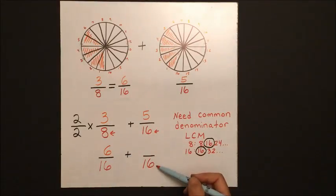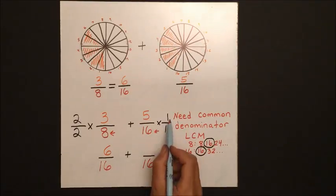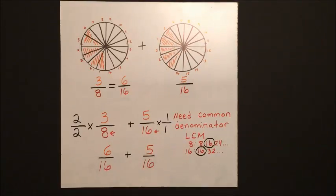With the second pizza, again, we need to multiply it by something, but 16 times 1 will give us 16, and our numerator will stay 5.